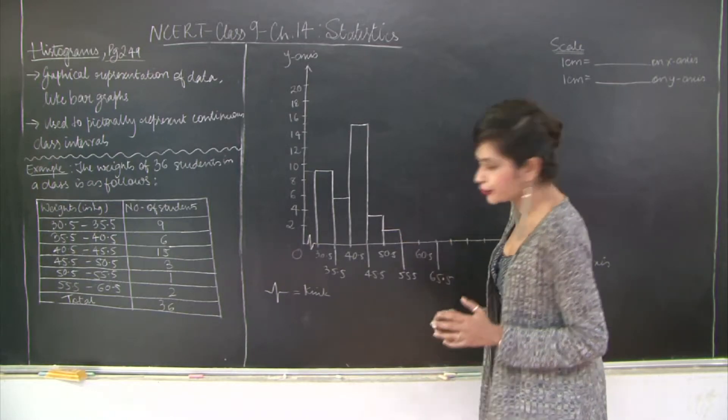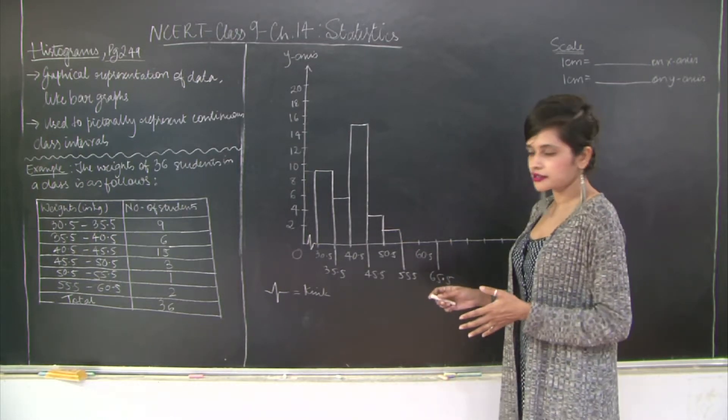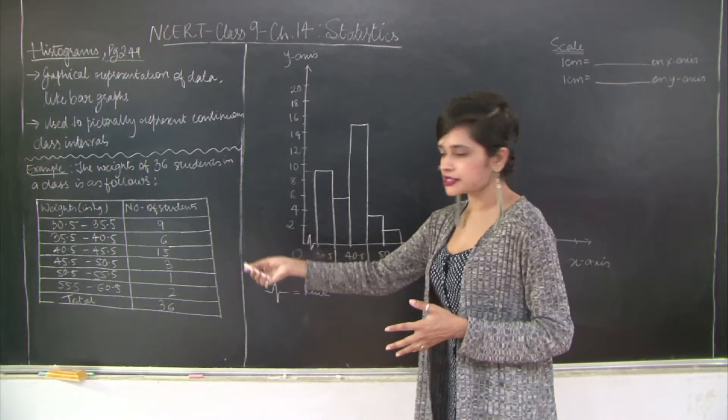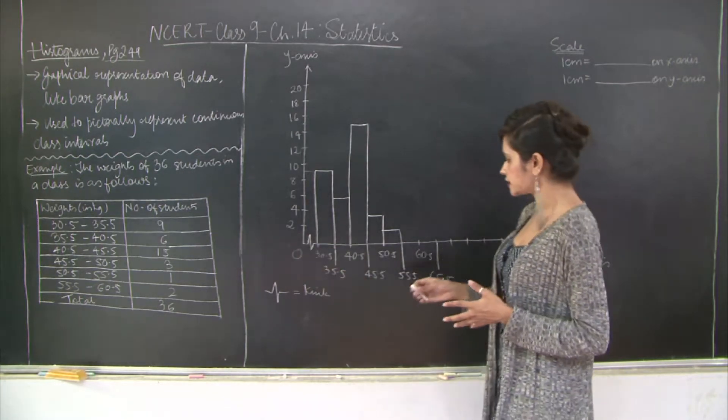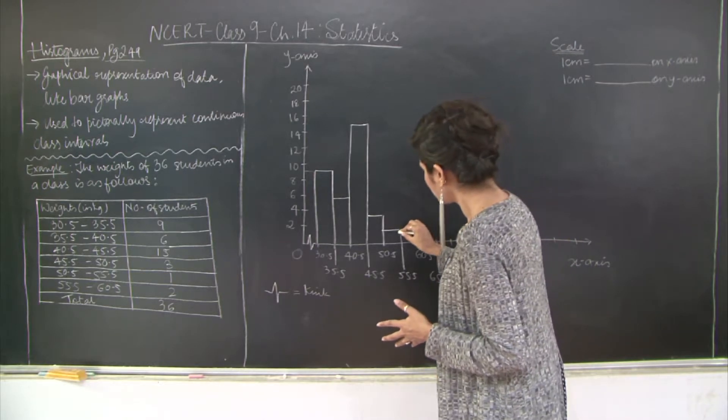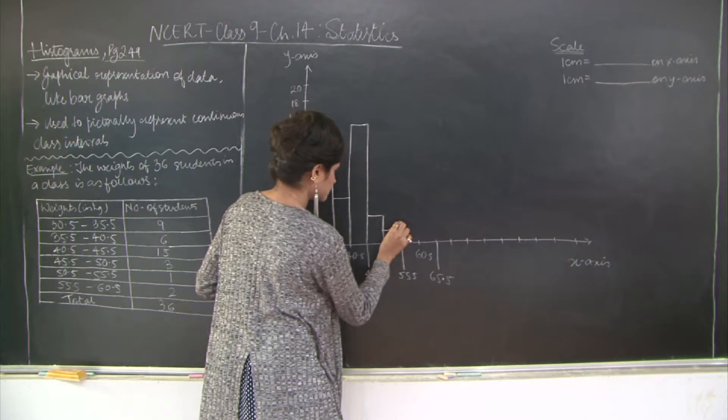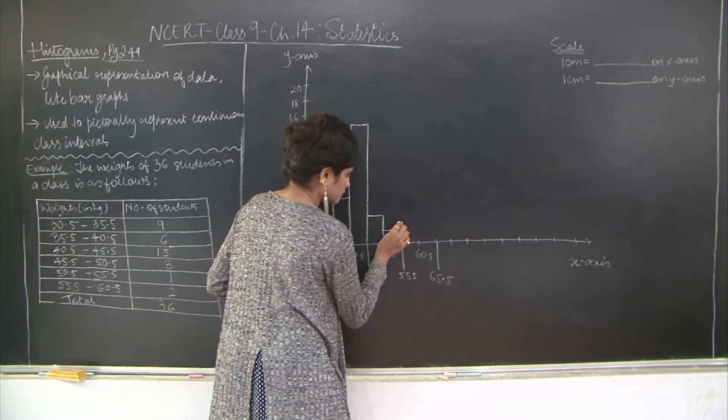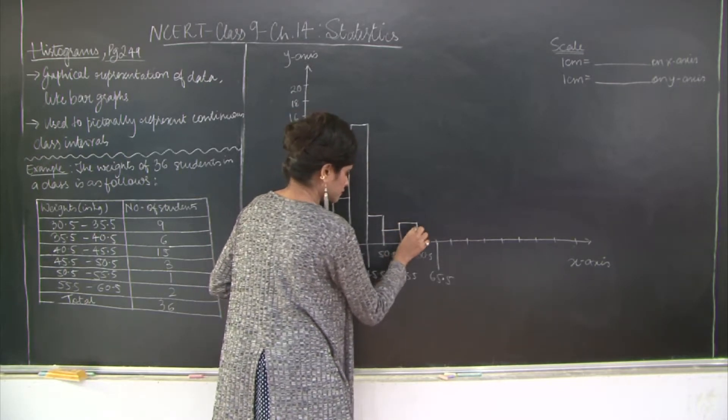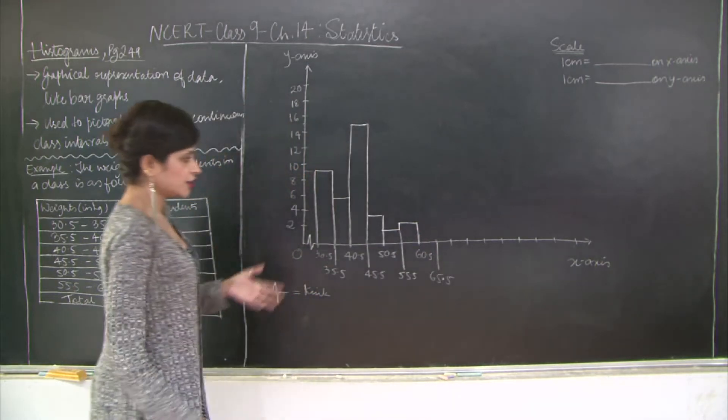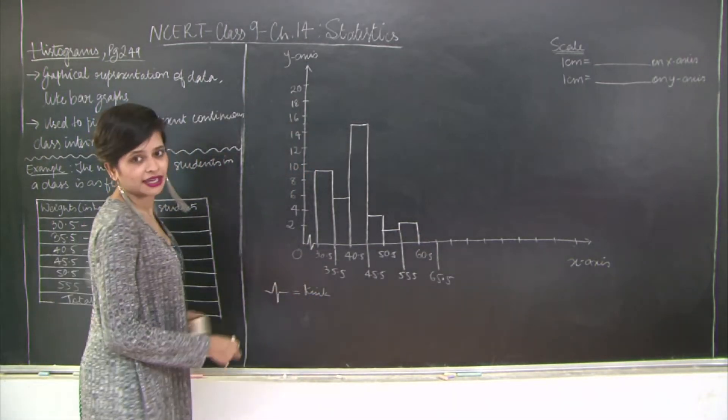Please make sure you are using a scale to draw this. Then you have the class interval 55.5 to 60.5 which is 2. And you can reduce the length of the x-axis if you want.